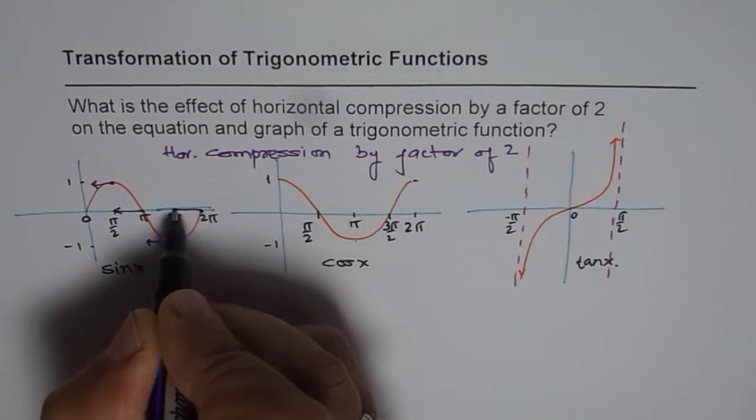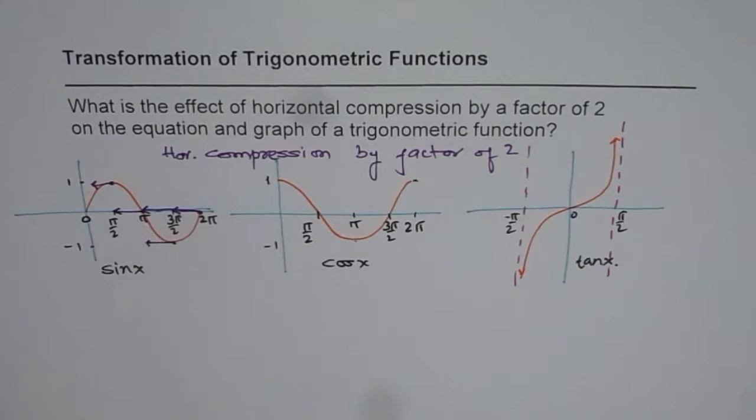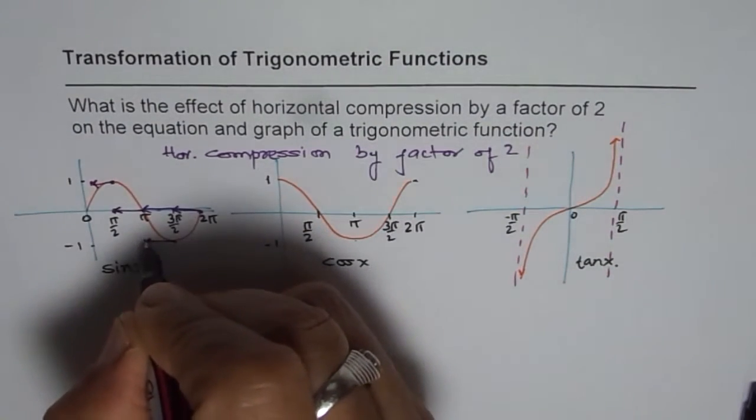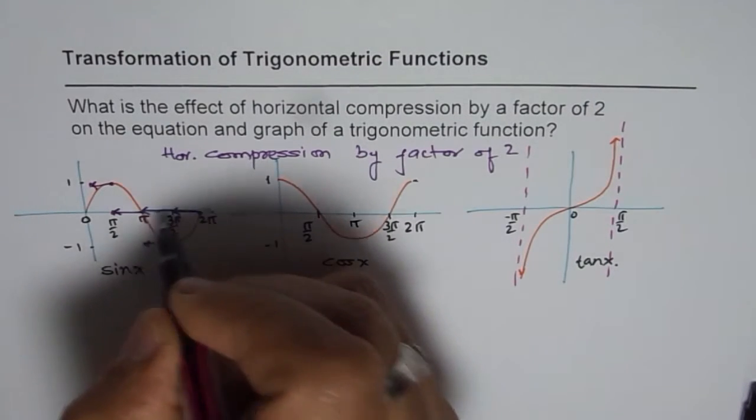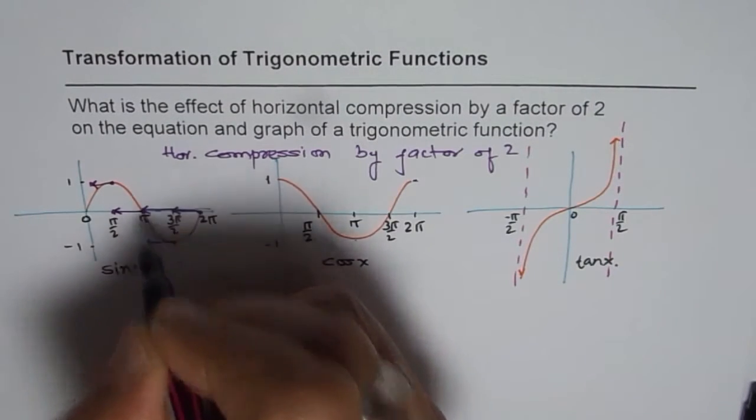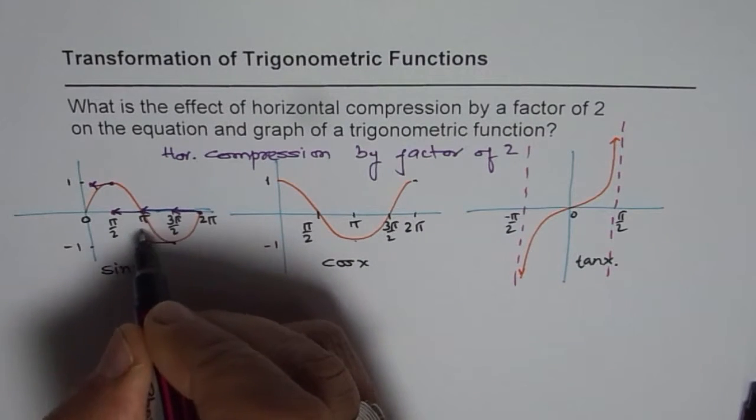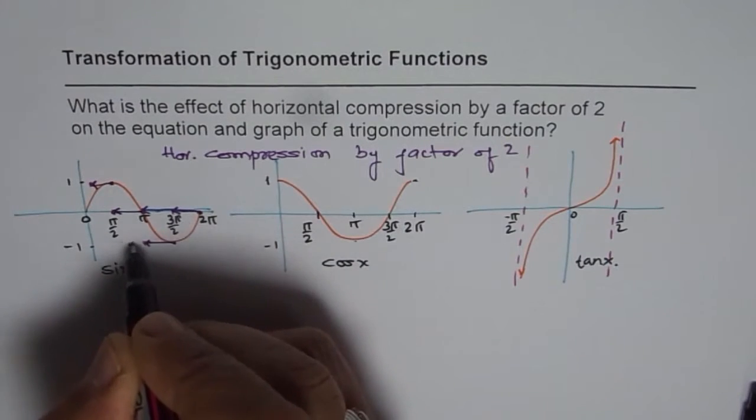Every point comes half way, so this is half of 2 pi is pi. So those are the new points for my sine function. And as you can see, 2 pi will come here. And as 3 pi by 2 compression is kind of here, so that is where it is.